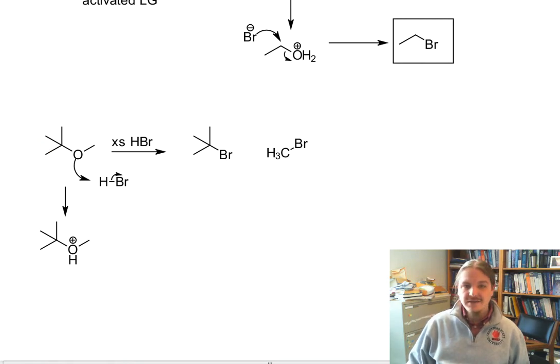The difference then becomes what happens next. What happens next is because I have a tertiary group over here, instead of the subsequent reaction occurring through an SN2-type pathway, we can get fragmentation here to form the molecule of methanol and a tert-butyl cation.